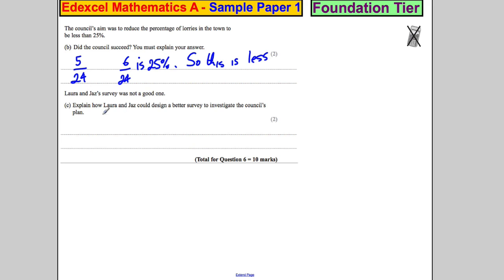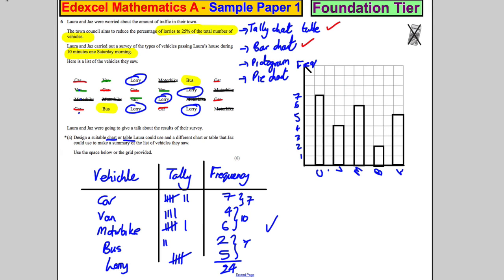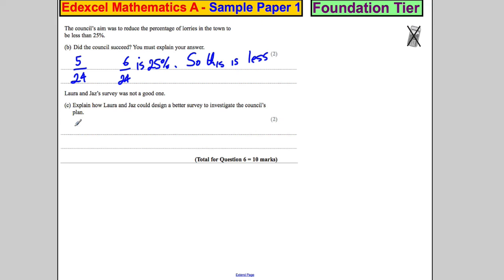Laura and Jazz's survey was not a good one. Explain how Laura and Jazz could design a better survey to investigate. Well they only did their survey for 10 minutes on one Saturday morning. So they should do more days, not just Saturday. And they should also do more time, not just 10 minutes. And that would be the end of this question.